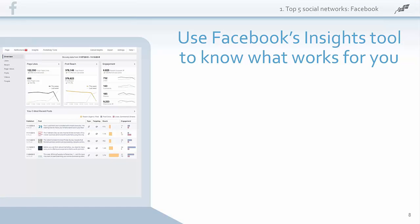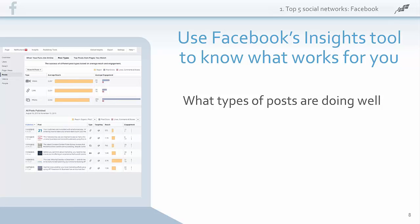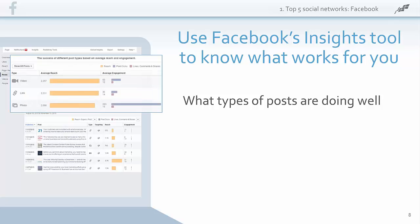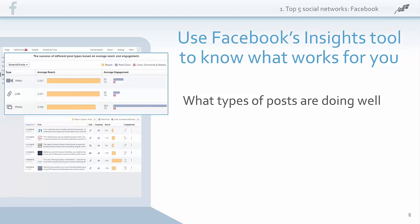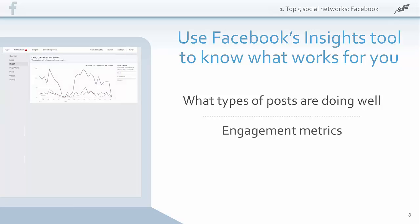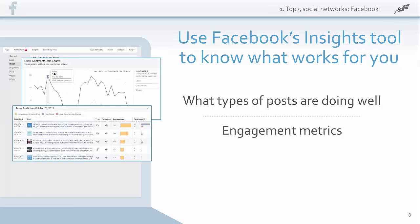The best way to find out what content works for your fans is to take advantage of Facebook's Insights tool, which provides a ton of great reports and data. Click the post link to find out what types of posts — videos, photos, status updates, or links — are doing well with your audience. If certain content types aren't getting clicks, likes, comments, and shares, don't waste time on them; focus on what's getting the best engagement. Click on the reach tab and scroll down to the chart showing your likes, comments, and shares over time. You can click on particular days to see what content was getting interactions that day.